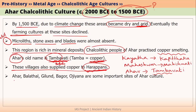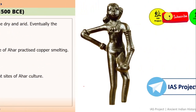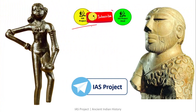So, some of the important sites in Ahar culture are Ahar (also called Tambavati), Balathal, Gilund, Bagor, and Ojiyana. If you like this video, please subscribe. You can download this presentation from our Telegram channel — the name of the channel is IIS Project, and the link is given in the description below.